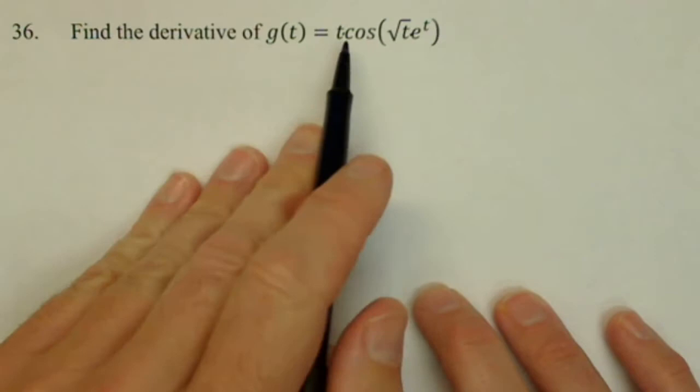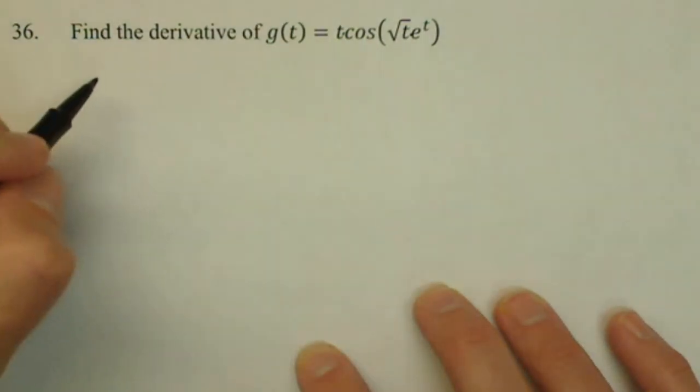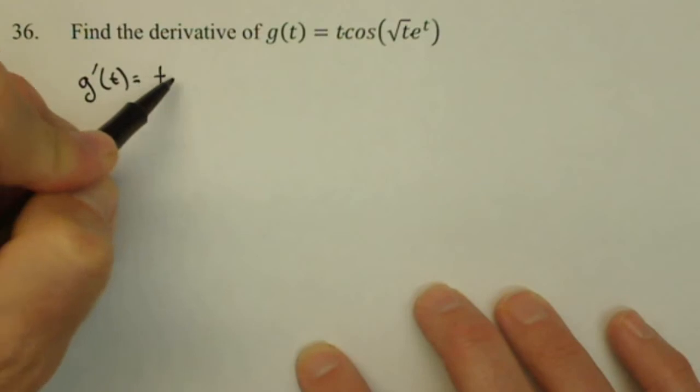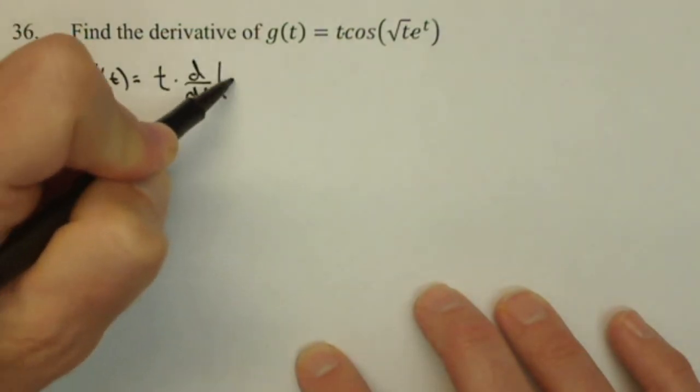So first thing we need to do is set up the outside, which is a product rule. So when I go to start my g prime of t, just to make this one obvious, I'll kind of break it into steps.